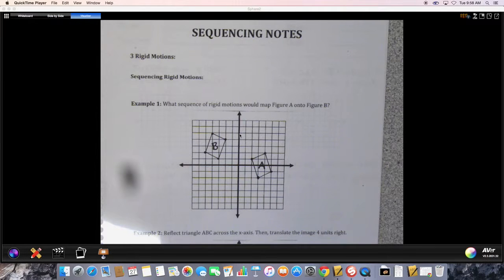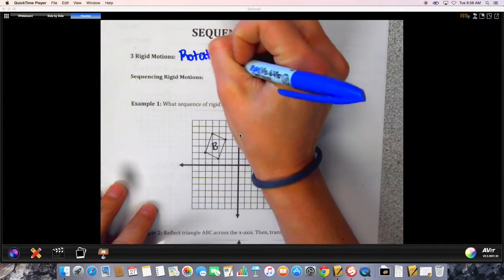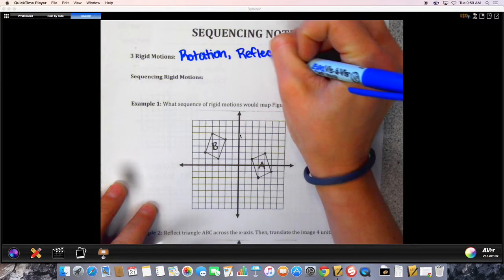We're going to talk about sequencing. What we're sequencing are the rigid motions. Now we have actually talked about rigid motions but we haven't been using that term. We know three of them: they are rotation, reflection, and translation.